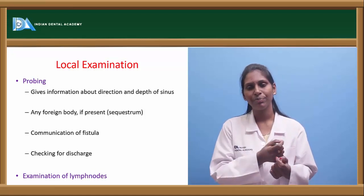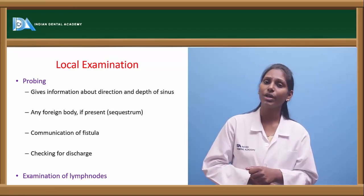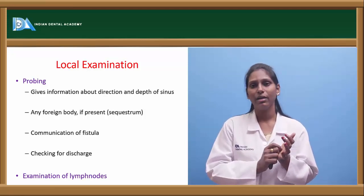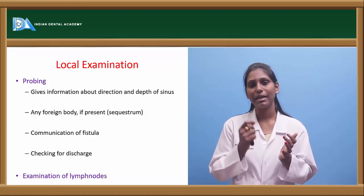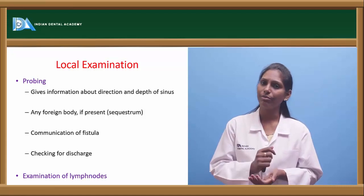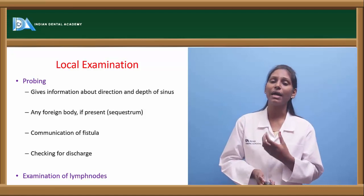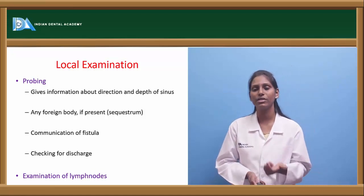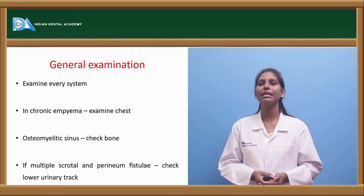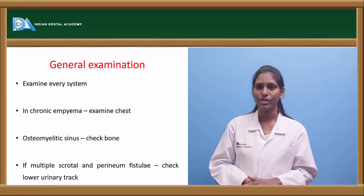You can check for through-and-through fistula connection with the help of a probe. You can also check for any foreign body or sequestrum — if there is any mobile thing present underneath the fistula. Examination of lymph nodes can also give us an idea about what kind of fistula or sinus it is.